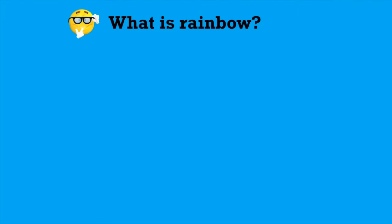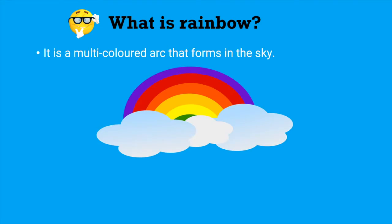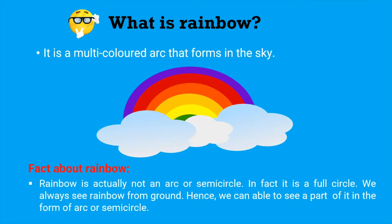Rainbow is a multicolored arc that forms in the sky. There is one fact that we don't know about rainbow: rainbow is actually not an arc or semicircle. In fact it is a full circle. We always see rainbow from ground, hence we can see only a part of it in the form of arc or semicircle.